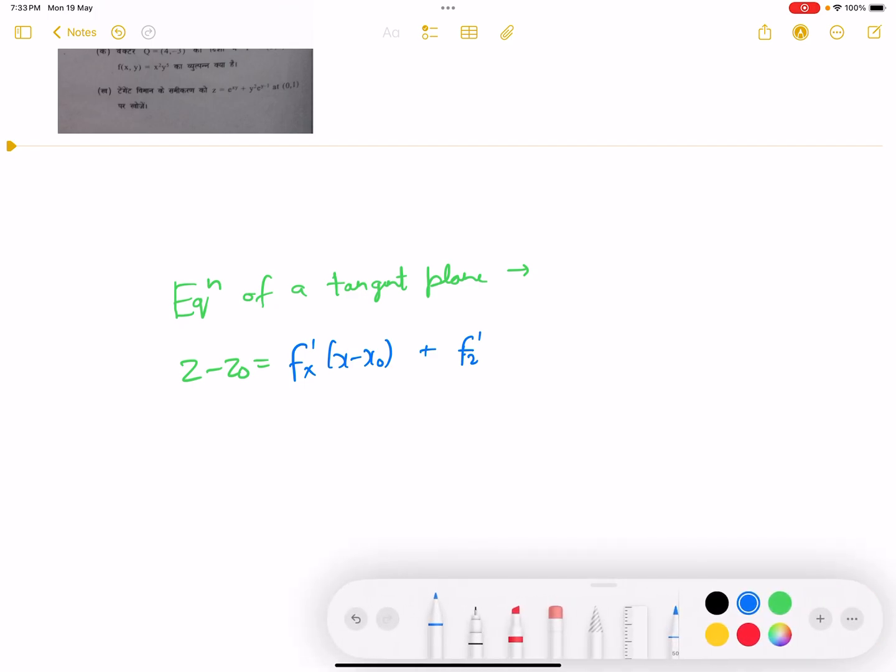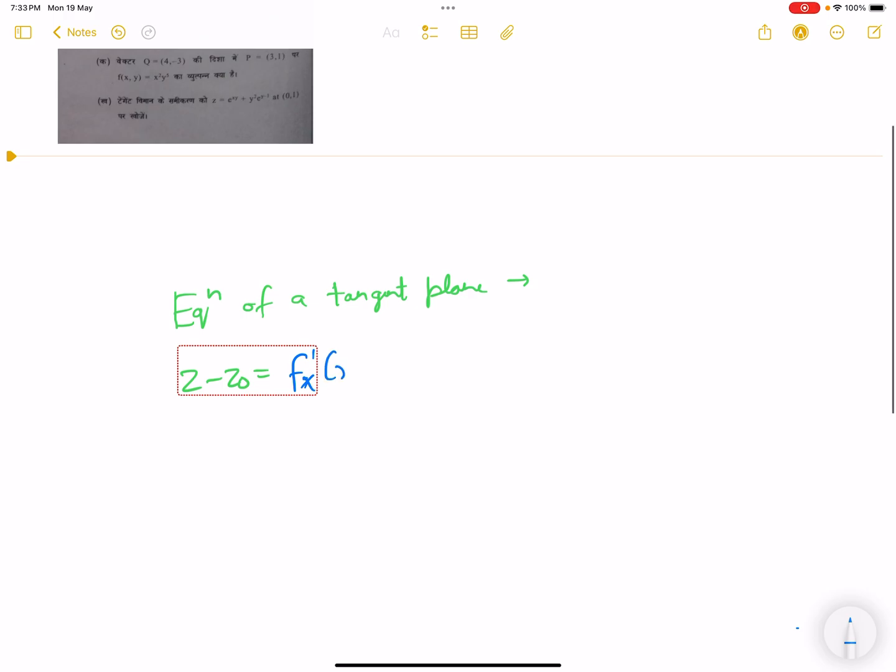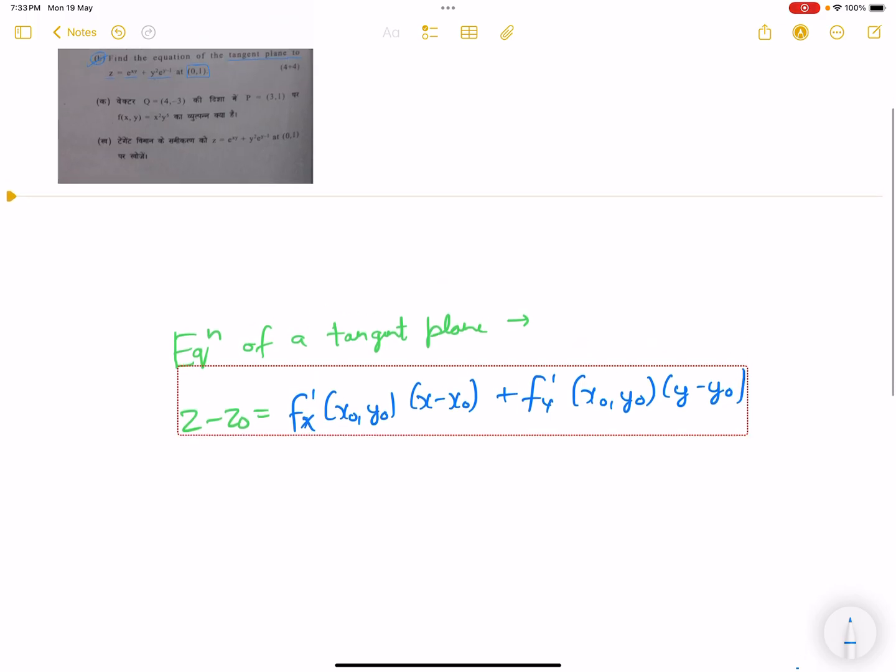So this is at point (x₀,y₀) which will be given in the question. f'ₓ at point (x₀,y₀) times x minus x₀ plus f'ᵧ at (x₀,y₀) times y minus y₀. The point given is (0,1).